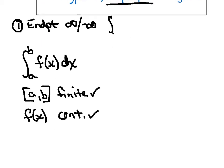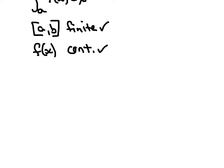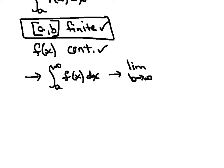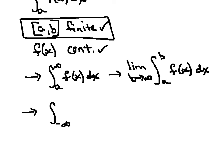Today we're going to focus on violating that first condition. The first example is an integral that starts at a, which is a finite number, but goes all the way to infinity. We're going to rewrite that in terms of a limit: the limit as b approaches infinity of the integral from a to b of f(x). We find the antiderivative of f, evaluate it with bounds of b and a, then evaluate the limit as b approaches infinity.